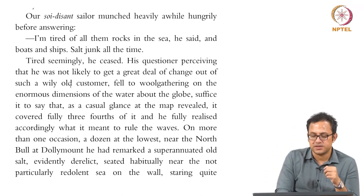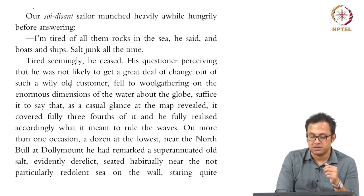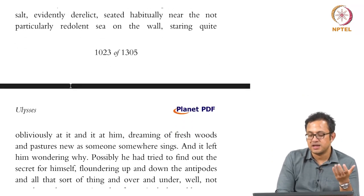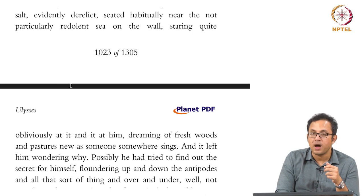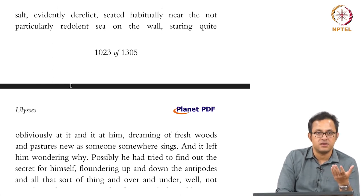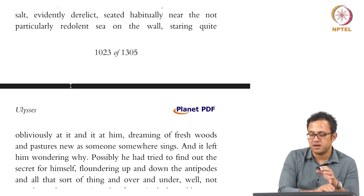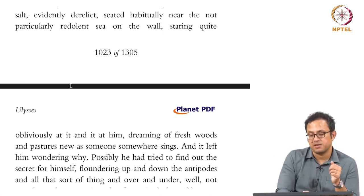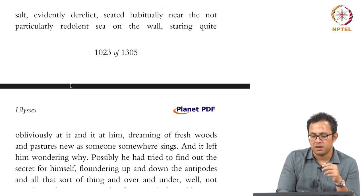On more than one occasion, a dozen at the lowest, near the north bull at Dolly Mount, he had remarked a superannuated old salt, evidently derelict, seated habitually near the north, particularly redolent of sea, on the wall, staring quite obliviously at it and it at him, dreaming of fresh woods and pastures new. And it left him wondering why. Again, the whole idea of a series of tired sailors becomes important in Ulysses, because tiredness in seafaring is a very important theme in the Homeric tale as well. The image of tired sailors staring at the sea, which is staring back at them, becomes a very moving visual image in Ulysses.